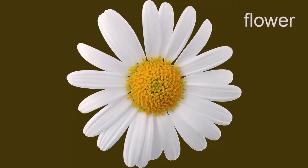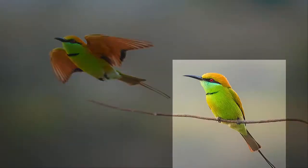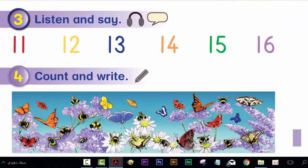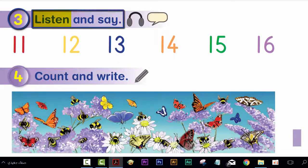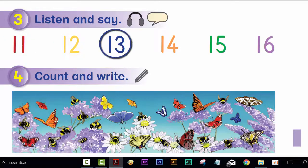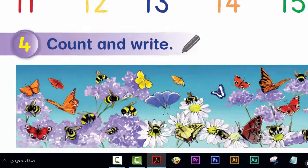This is a flower. A flower. This is a bird. A bird. Activity 3: listen and say. 11, 12, 13, 14, 15, 16. Have a nice day! See you soon!